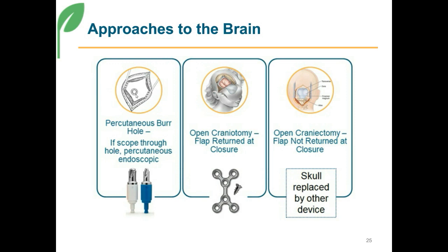The first one is a burr hole. The burr hole is a small hole — to give you a relationship for this, it would be a small enough hole that would allow a small tube to be placed inside. It could allow another device like a monitoring device to be placed through that hole, but the surgeon cannot really see the brain through this hole except for what is right underneath it. It's usually about the size of the barrel of a ballpoint pen, maybe a centimeter or so at the most.